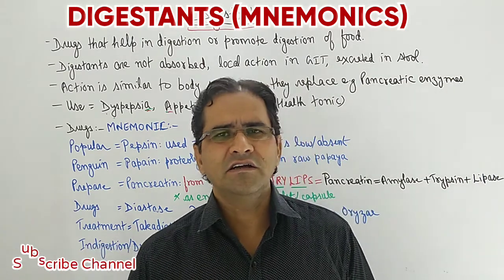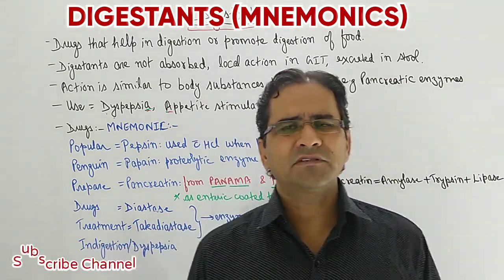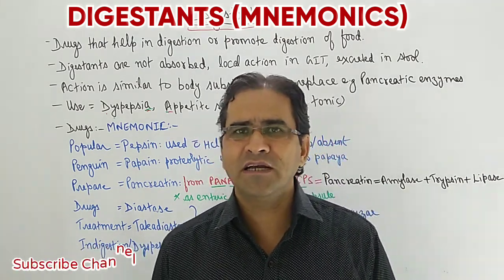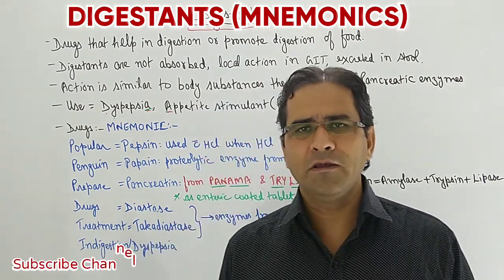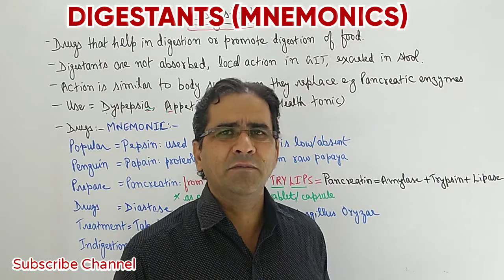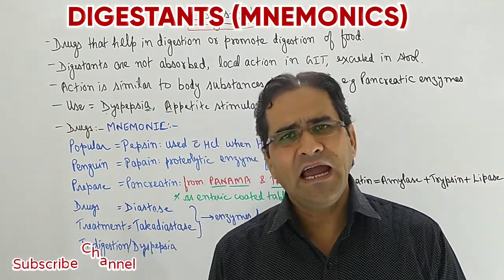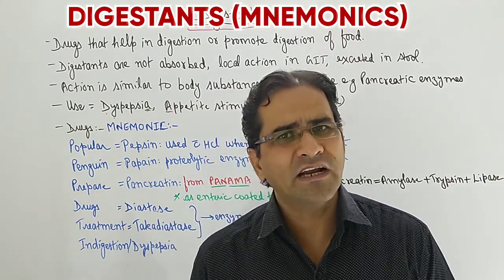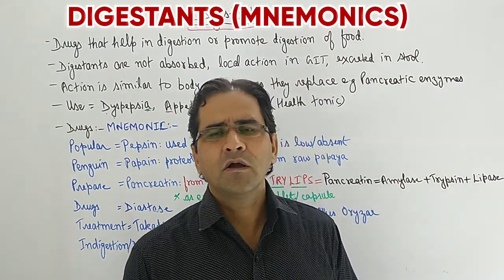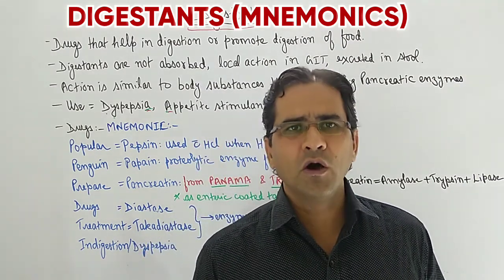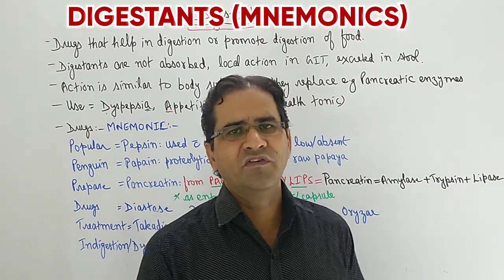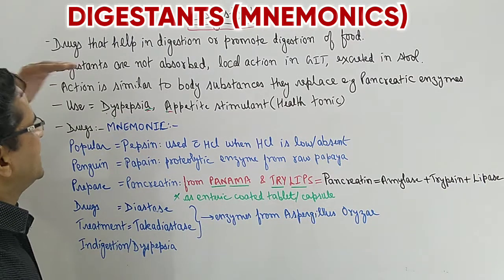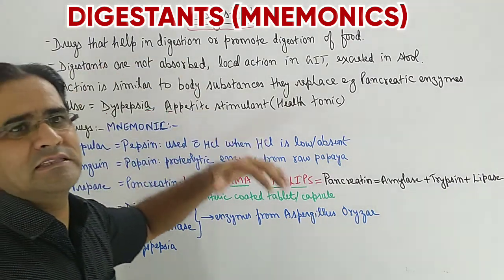There are certain conditions when the enzymes, or the HCL and the components which are required for the digestion of food, are absent or their content is low in our body. So what we are doing is we are attempting to replace those substances — these substances are supplied externally. The enzymes which are deficient or not present are fulfilled by giving drugs externally, and they perform the function of the substance which is absent.